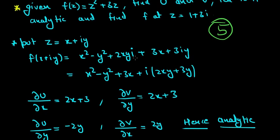Now we will separate the real and imaginary parts. We get this and this, so this is our u and this is our v.